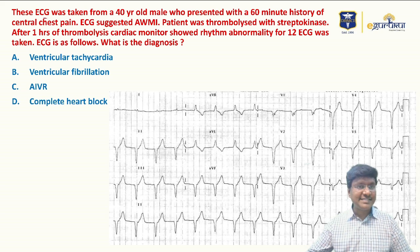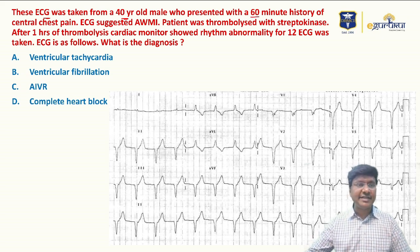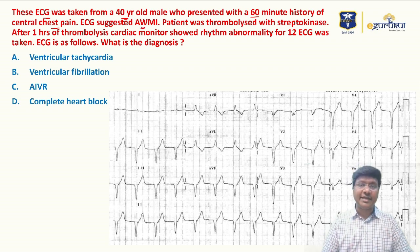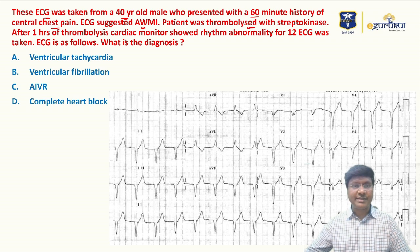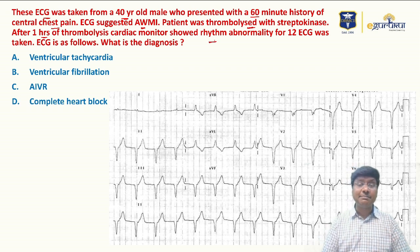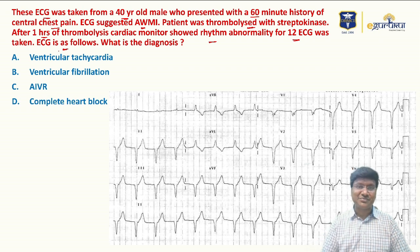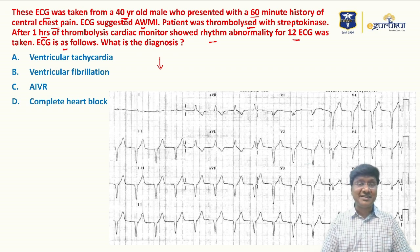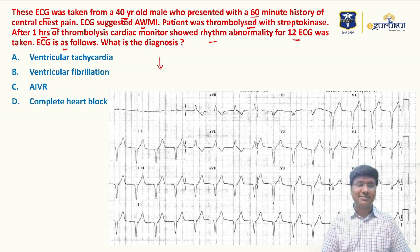Today's ECG is of a 40-year-old male who presented with a 60-minute history of central chest pain. The ECG suggested anterior wall MI and the patient was thrombolyzed with streptokinase. After one hour of thrombolysis, the cardiac monitor showed a rhythm abnormality, for which a 12-lead ECG was taken.